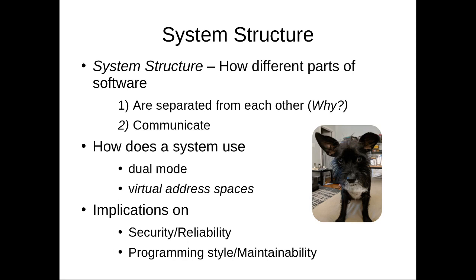In a monolithic system such as Linux, you have a kernel. That kernel essentially has access to all of the resources on the system and must be absolutely trusted. We run applications in processes above that, and that defines the system structure. Each of those processes are executed in user mode and somehow isolated from each other. They communicate with the system effectively by system calls, asking the kernel for different features using the hardware features of dual mode protection.